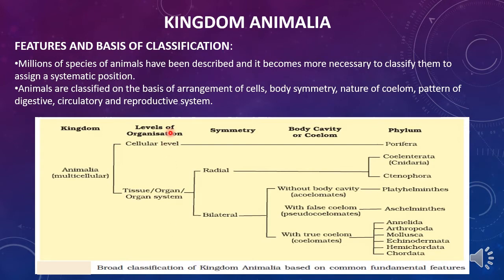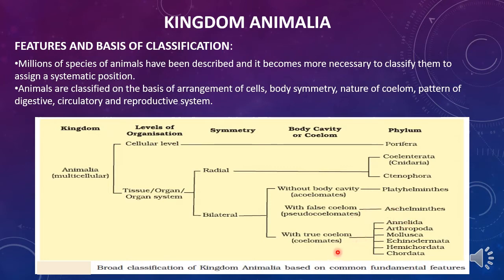Animals are classified on the levels of organization: cellular level, tissue level, organ level, and organ system level. At the cellular level, it comprises animals with a simple cellular system, including Porifera. At the tissue, organ, or organ system level, they constitute other animals in the animal kingdom, further divided based on symmetry. If radially symmetrical, they are placed under Coelenterata and Ctenophora; if bilaterally symmetrical, under other groups. Bilaterally symmetrical animals are further classified based on body cavity into acoelomates, pseudocoelomates, and coelomates — acoelomates include Platyhelminthes, pseudocoelomates include Aschelminthes, and coelomates include Annelida, Arthropoda, Mollusca, Echinodermata, Hemichordata, and Chordata.